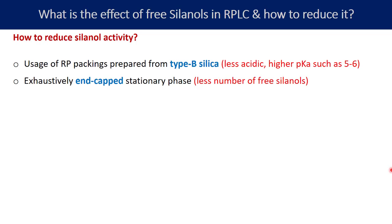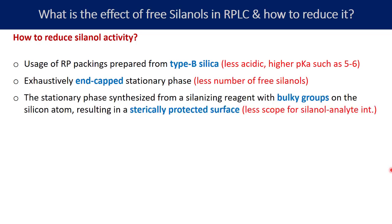Third, the stationary phase can be synthesized from a silanizing agent with bulky groups on the silicon atom, resulting in a sterically protected surface. The steric hindrance will not allow the analyte to reach the available silanol groups, preventing silanol-analyte interaction. Bulky groups such as phenyl groups present on a C18 phase can certainly help in reducing the secondary silanol effect.